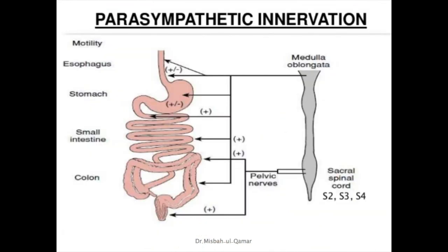To summarize GI parasympathetics: fibers are either in the vagus nerve supplying from the esophagus up to the proximal two-thirds of the transverse colon, or in the pelvic parasympathetics supplying the distal one-third of the transverse colon up to the anus. The fibers traveling in the vagus and pelvic nerves are pre-ganglionic fibers, while the post-ganglionic neurons of the GI parasympathetic system are located in the myenteric and submucosal plexuses.